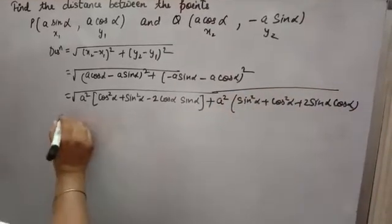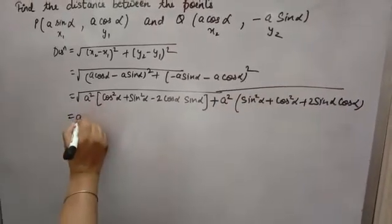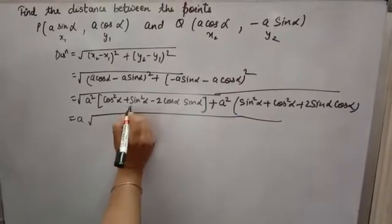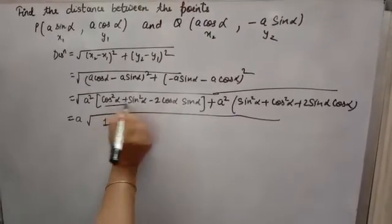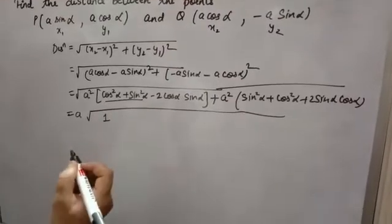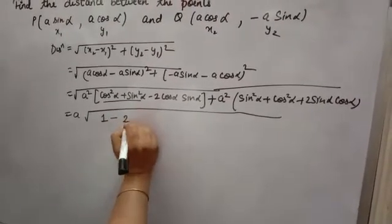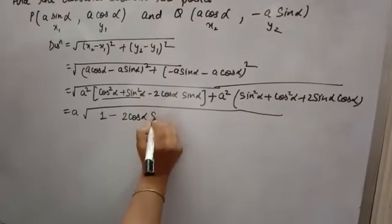Now we simplify it. A square under root, a will come out. And inside cos square alpha plus sin square alpha is 1. This is the formula that cos square alpha plus sin square alpha is 1. Minus 2 cos alpha sin alpha as it is right.